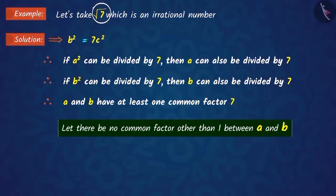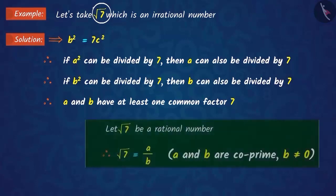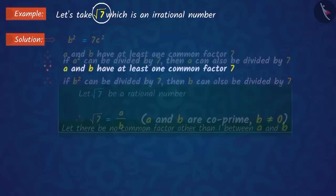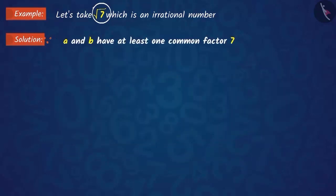This contradiction has occurred because we have made an incorrect assumption that √7 is a rational number. Therefore, we have proven that √7 is an irrational number because we found a common factor other than 1 in a and b.